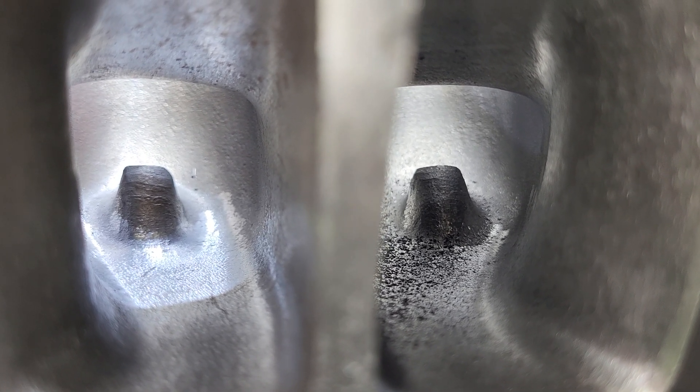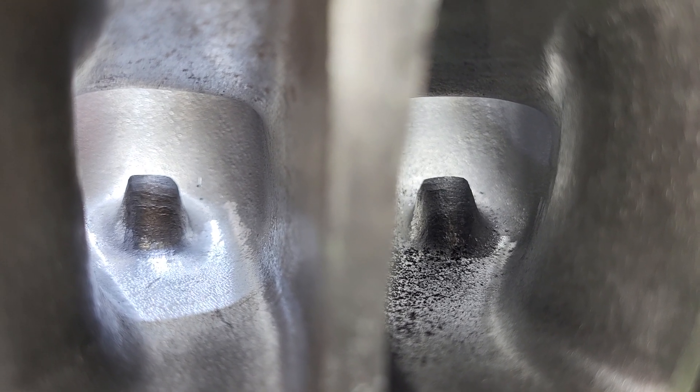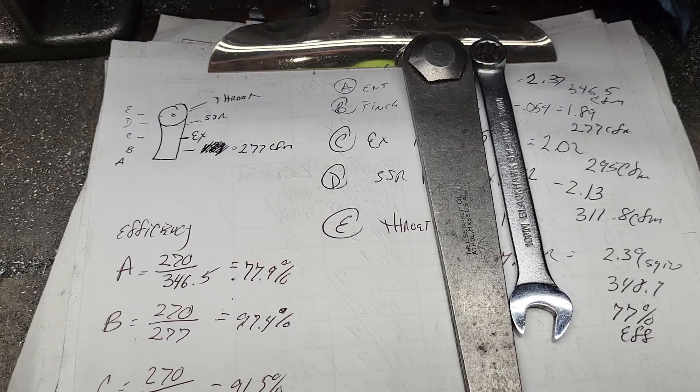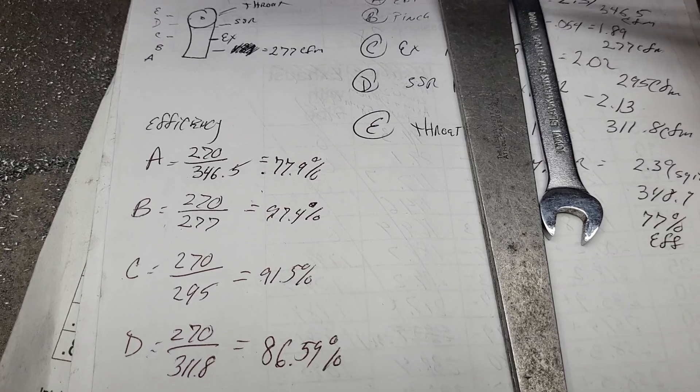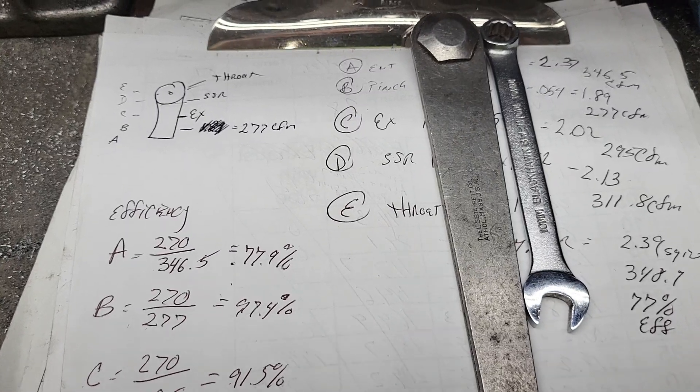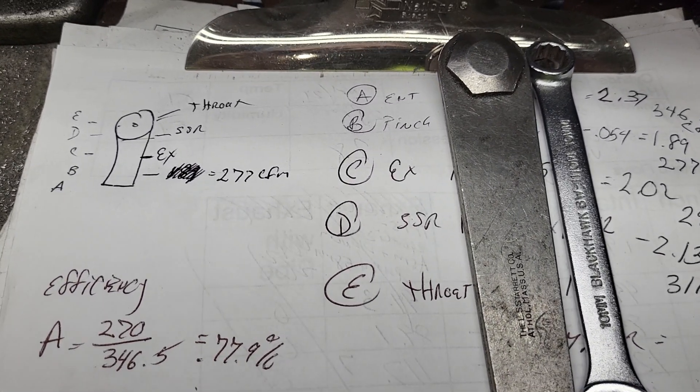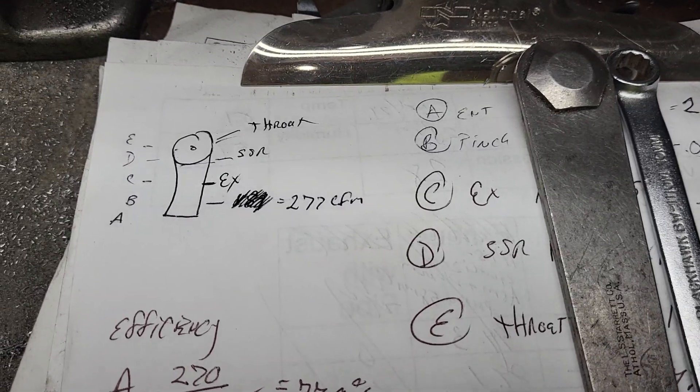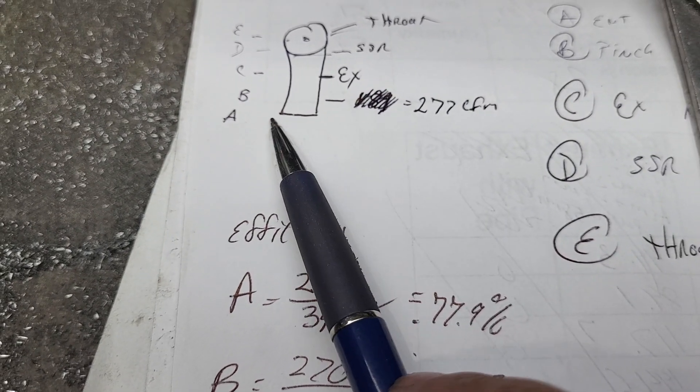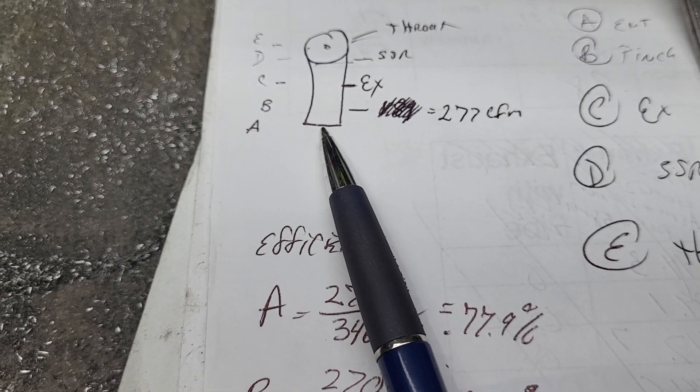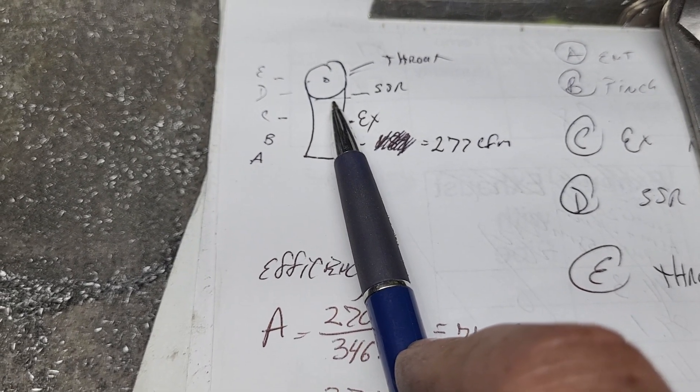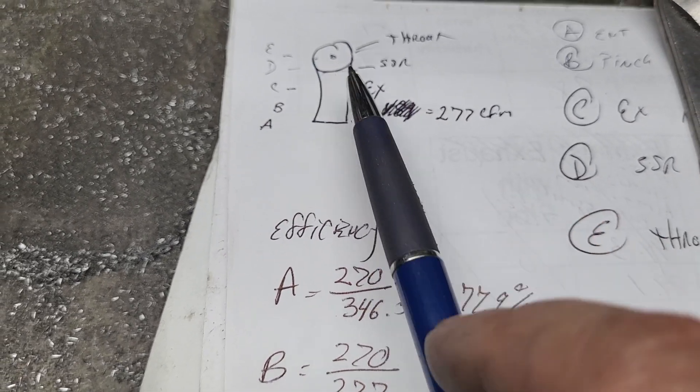I broke down each part of the ports on the head and the intake manifold to find out how efficient they are at different sections. Now I've got my dimensions blocked off so you can't see them because there's way too much work and I'm not going to just give that info away. What I did is I took our intake port and I broke it up: A is our very opening which is a hair bigger than a 1204, B is our pinch, C is our midsection, D is the apex of our short side radius, and E is right at the throat.